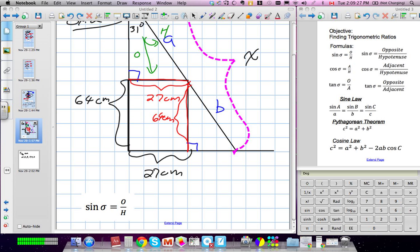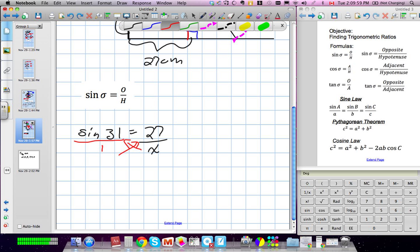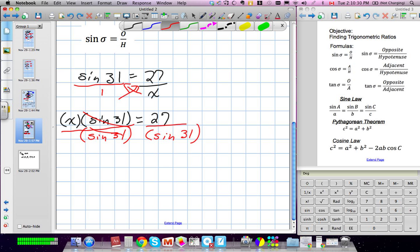So we have sine 31 equals the opposite side, which was 27, over the hypotenuse, which was our unknown. I need to isolate x. Think of cross multiplying in this case. I'm going to get x multiplied by sine 31 equals 27. Now we still have to isolate x, so I'm going to divide both sides by sine 31. We're left with x equals 27 divided by sine 31.